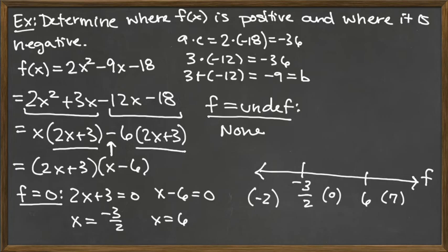When assessing each interval, I take that test value and plug it into the factored form. I'm just testing what the sign would be for each factor because I only care about the sign. When I take in negative 2, I've got 2 times negative 2 plus 3, that's negative 4 plus 3, so negative. Negative 2 minus 6 is also negative. Negative times negative is overall positive. When I plug in 0 to the first factor, 2 times 0 plus 3 is positive. 0 minus 6 is negative 6. Overall positive times negative gives us negative.